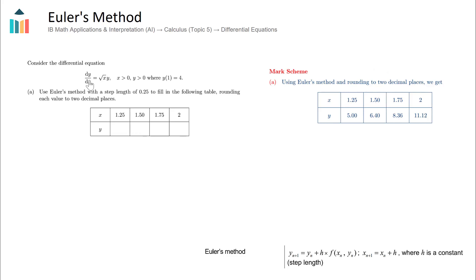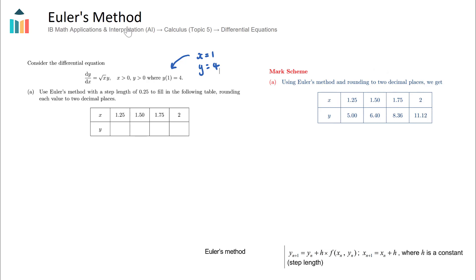In this example question we are given a differential equation dy/dx equal to the square root of x multiplied by y. We are given a particular solution telling us that when x equals 1, y equals 4. We are asked to use Euler's method with a step length of 0.25, meaning we add 0.25 to our x value each time, giving x values of 1.25, 1.5, 1.75, and 2. We want to find all the corresponding y values using Euler's method.